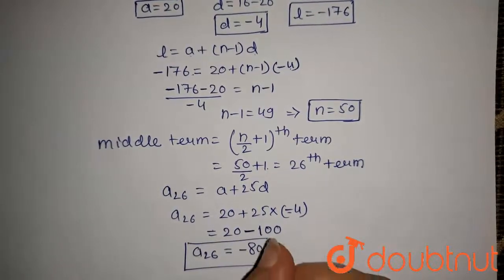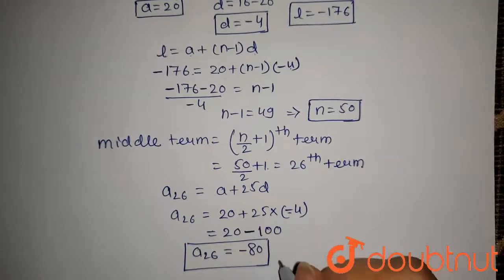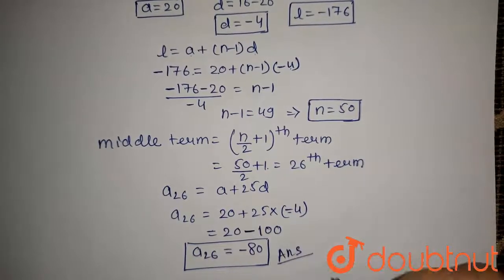So the 26th term is the middle term and it is -80. So this is the answer of this question.